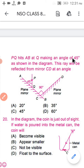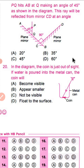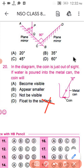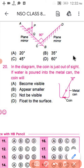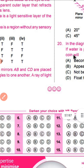This is the last question of this chapter. In the diagram, the coin is just out of sight. If water is poured into the metal can, the coin will become visible because when light travels through water, the angle of deviation causes the ray to reach the observer's eye. Option number A is the correct option. That's all for today's class. Thank you.